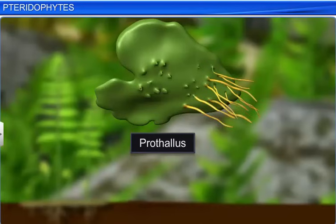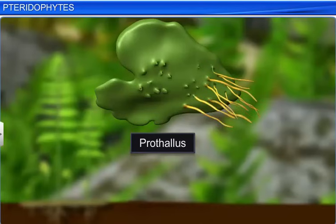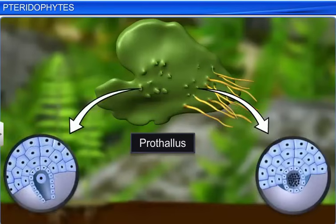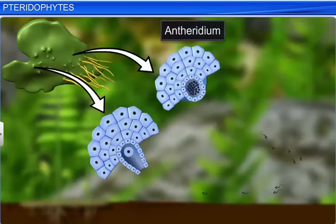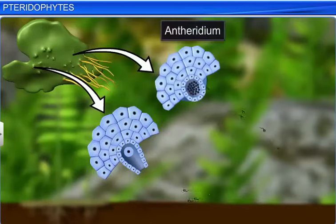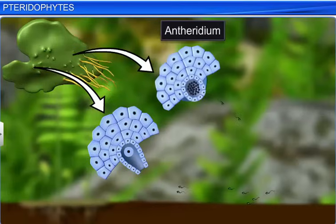The prothallus also bears the male and female sex organs — the antheridium and archegonium. The antheridium produces the male gametes called anthrozoids, whereas the archegonium produces an egg.